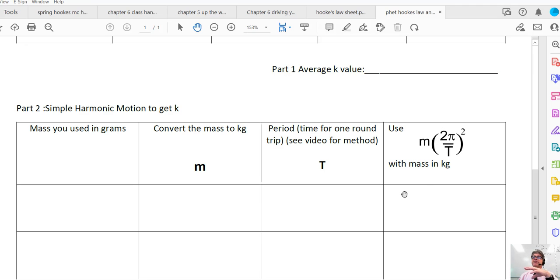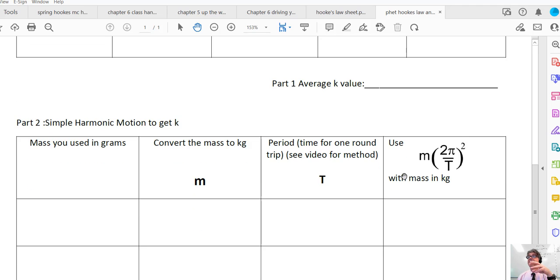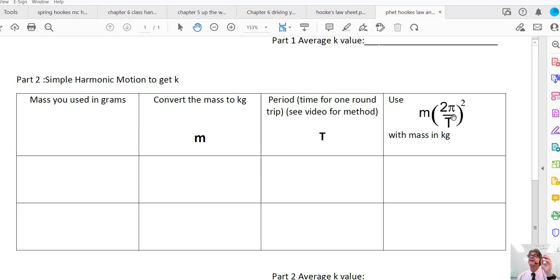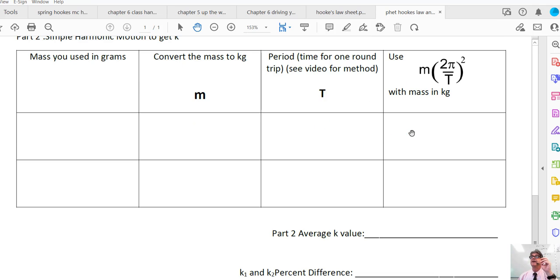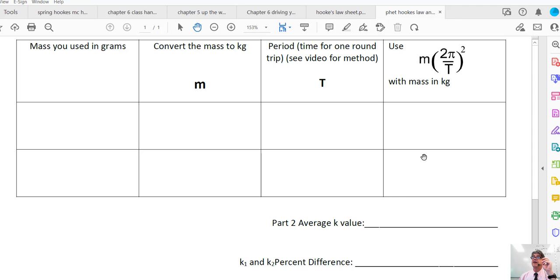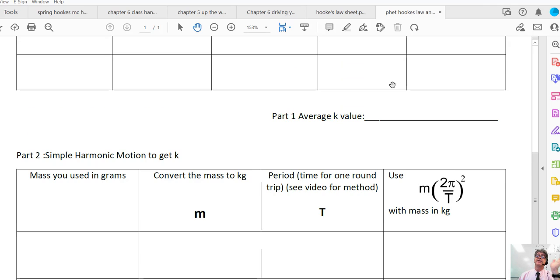If you didn't do this calculation last week, you might want to check with it. You should be getting a k value close to that k value because you didn't change your spring. So make sure that when you're doing the squares, this whole quantity is getting squared, and make sure that you're using the mass in kilograms here when you put it in for the M. And you're going to get two different k values, and I want you to do percent difference between the k value here and the k value there, and that's it.